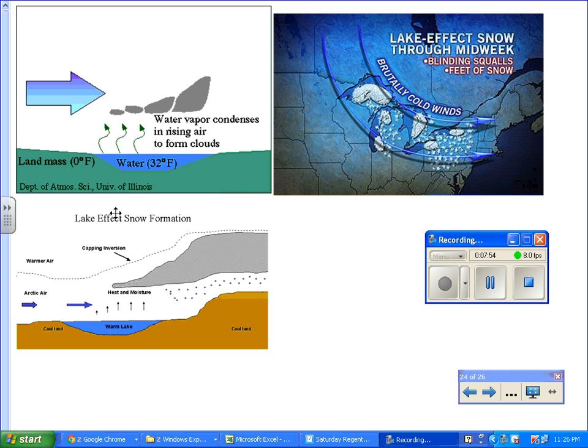Water vapor condenses, it rises to form clouds. If there's enough moisture, that moisture is going to fall in the form of snow and it's going to dump large amounts of snow in the areas near the lake. This is what we call lake effect snow.